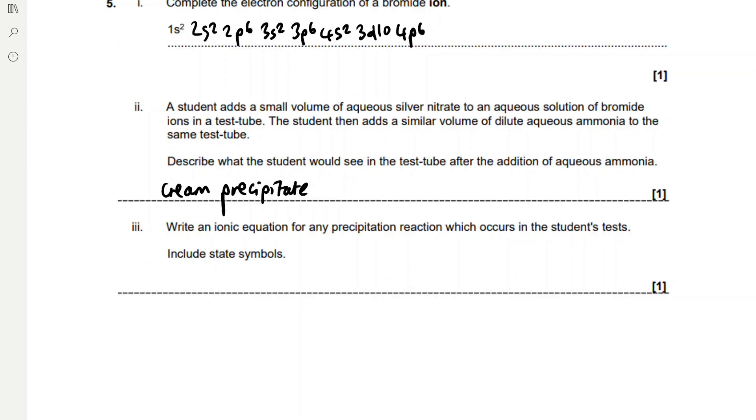Write an ionic equation for any precipitation reaction which occurs in the student's test. Include state symbols. That's the key bit. Make sure you include state symbols. We're adding aqueous silver ions to aqueous bromide ions to form solid silver bromide.